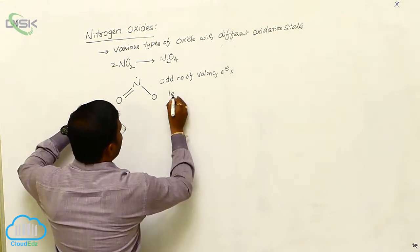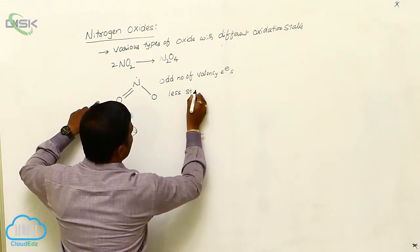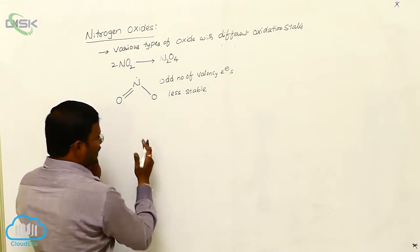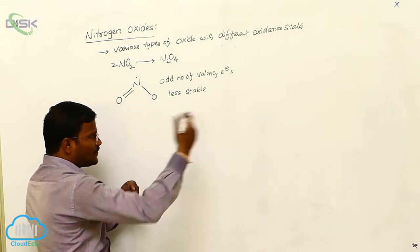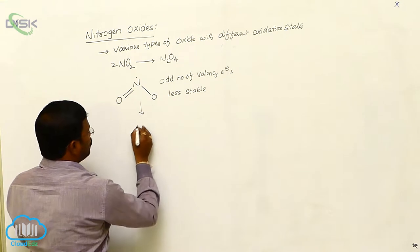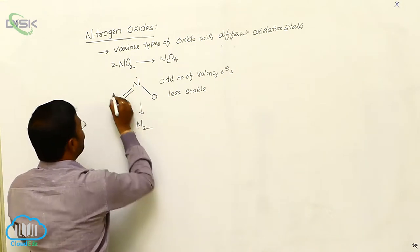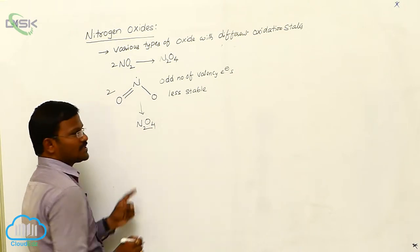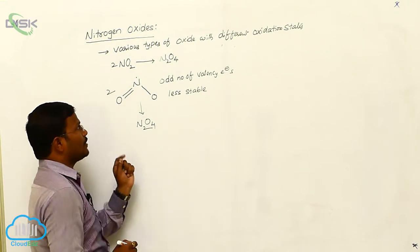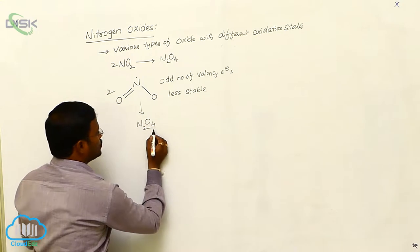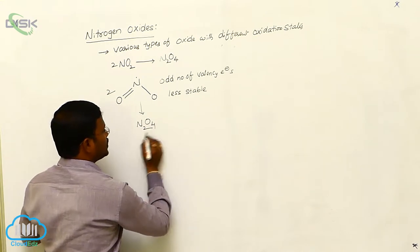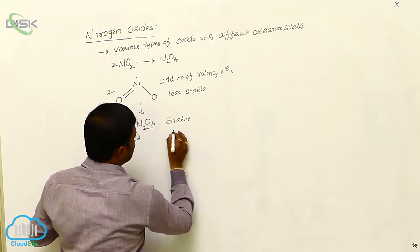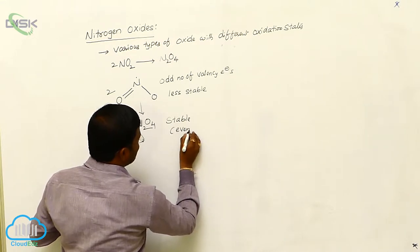This less stable nitrogen dioxide dimerizes — meaning one nitrogen dioxide combines with another nitrogen dioxide to produce N₂O₄. Two moles of nitrogen dioxide finally produce a dimer. The resulting dimer of nitrogen dioxide is dinitrogen tetroxide, which is stable.